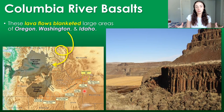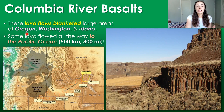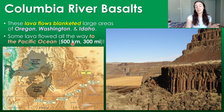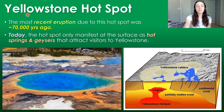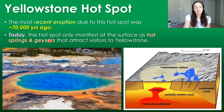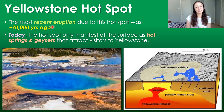The lava flows that make up the Columbia River Basalts blanketed large areas of Oregon, Washington, and Idaho — some of it even flowed all the way to the Pacific Ocean, 500 kilometers or 300 miles of lava flowing over land. In terms of this hotspot today, the most recent eruption was around 70,000 years ago. Today the hotspot only really manifests itself at the surface as hot springs and geysers that attract visitors to Yellowstone National Park. Nevertheless, it still represents a threat and could cause volcanic activity in the future that's more dangerous than hot springs and geysers.